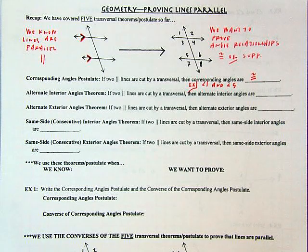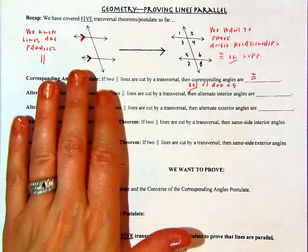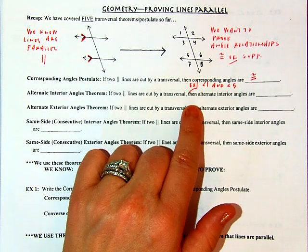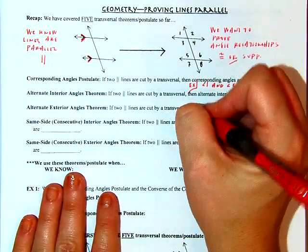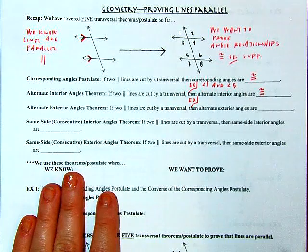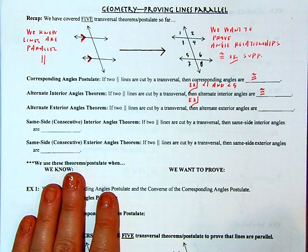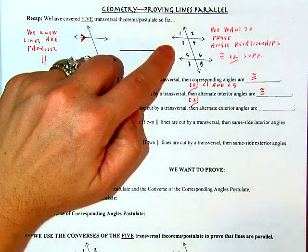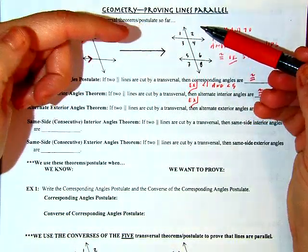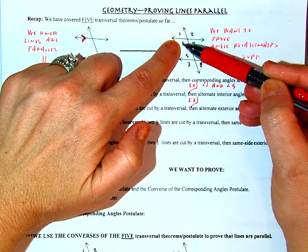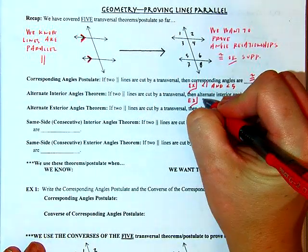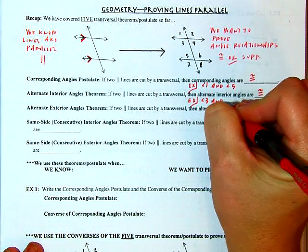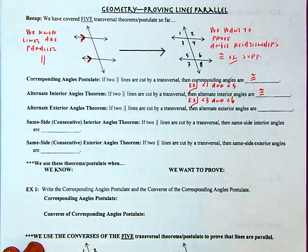Next, we have alternate interior angles. Again, if we know the lines are parallel, then any alternate interior angles are congruent. We want them to be on opposite sides of the transversal — alternate — and inside the parallel lines. So here we would say three and six, for example. Those would be alternate interior angles, so would four and five. I'm just going to write down one pair: three and six.